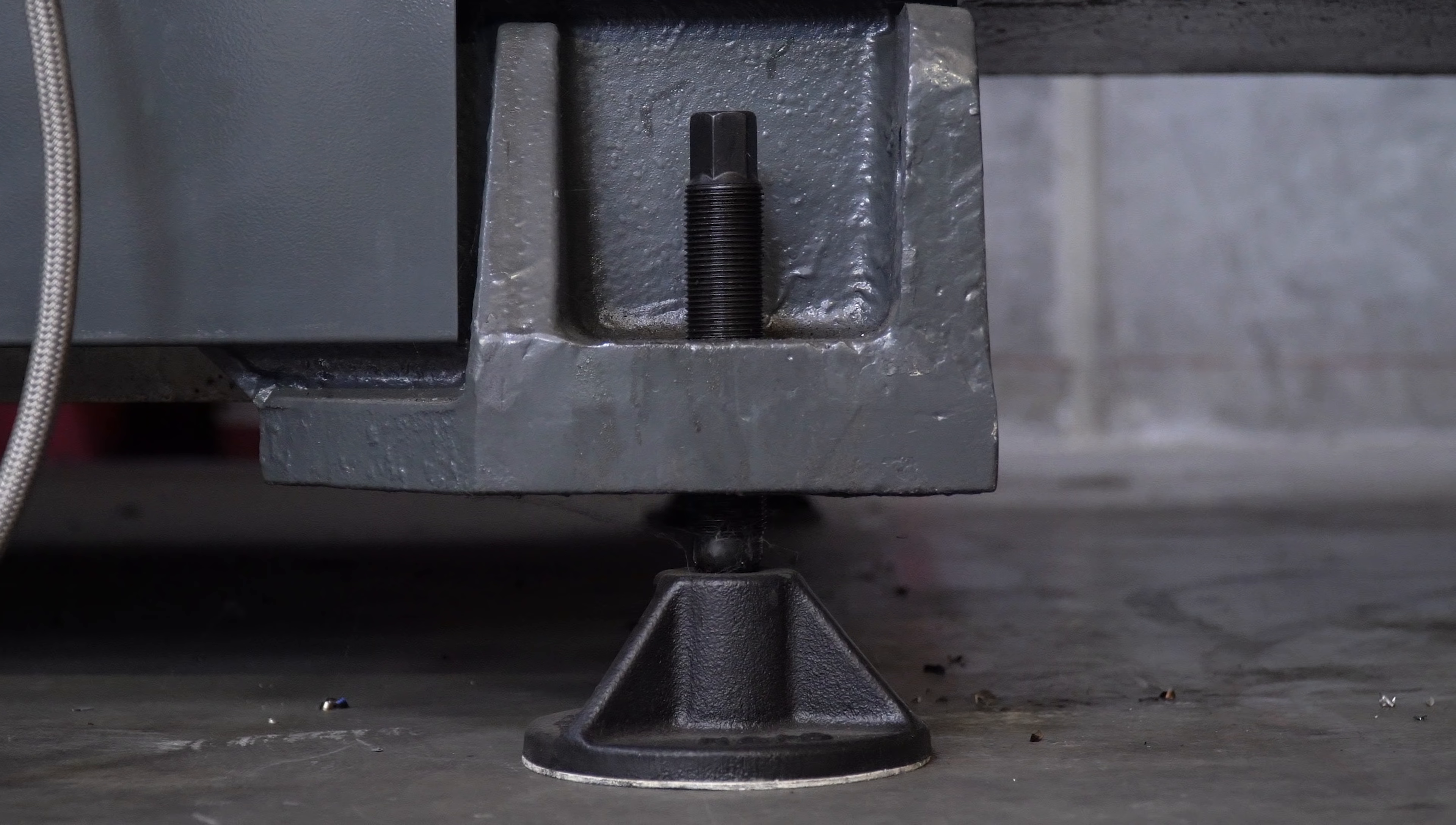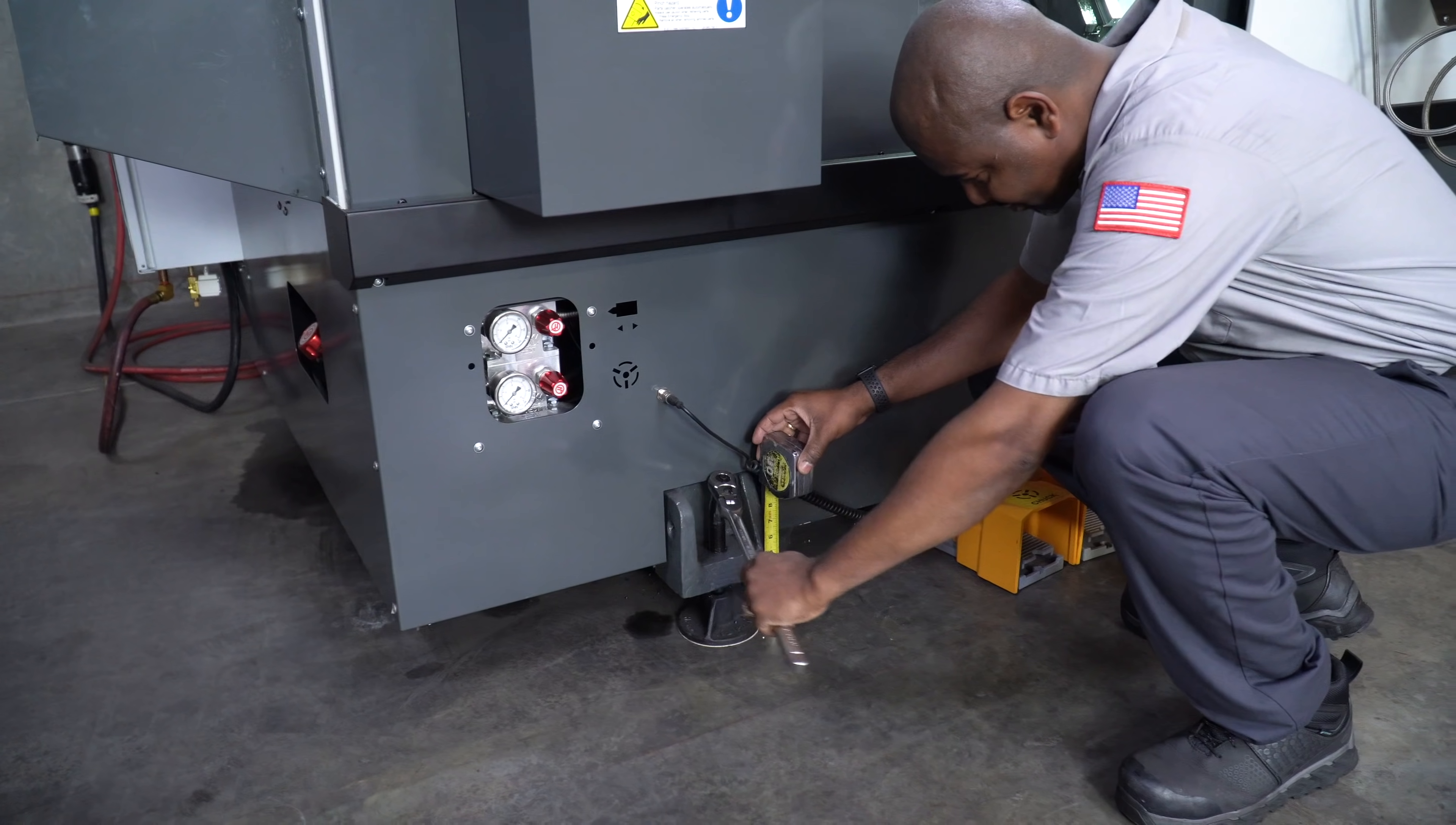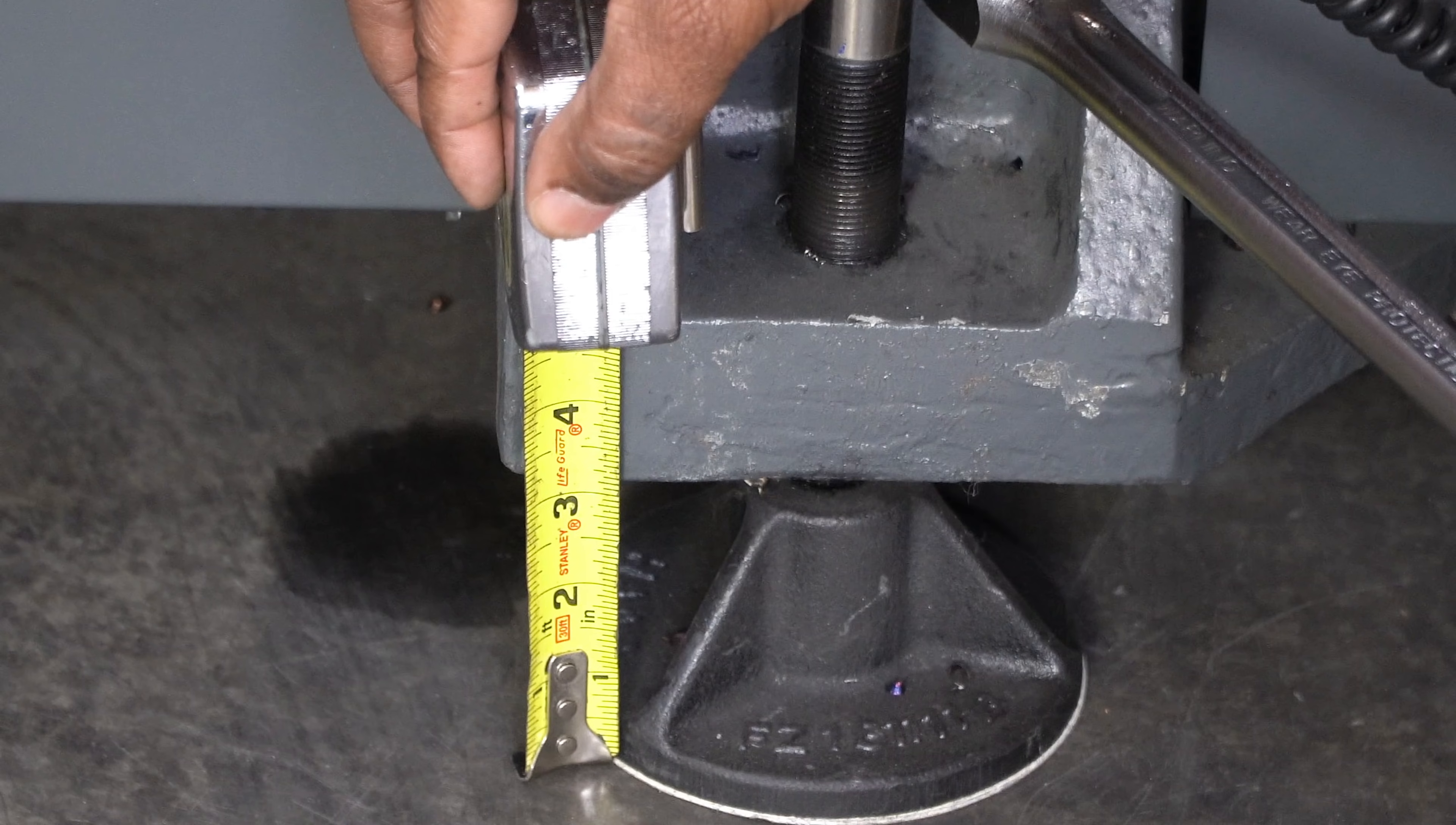For this machine, we're going to maintain three inches from the ground to the bottom of the casting on all four leveling screws.